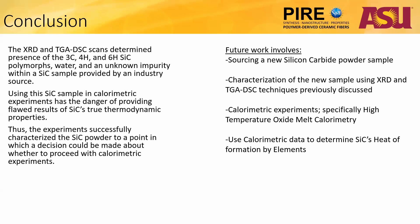Moving forward, future work involves finding a new silicon carbide sample and characterizing it. If characterization proves that the sample is pure, then calorimetric experiments, specifically high temperature oxide melt calorimetry, can be performed to determine the sample's heat of formation. This can lead us to understand more about SiC's thermodynamic properties and possibly lead us down the road of material optimization.